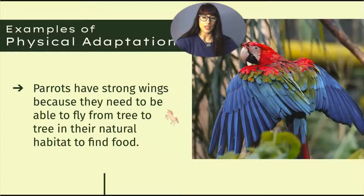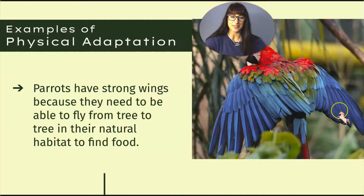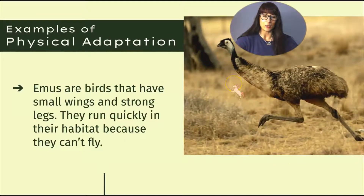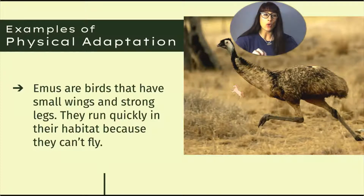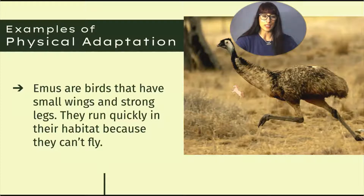Parrots have strong wings because they need to fly from tree to tree in their natural habitat to find food — that is the part of the body that helps them survive. Here we have an emu, a type of bird with small wings but strong legs. It can't fly, but it can run quickly in its habitat, and those strong legs are the physical adaptation designed for it to survive.